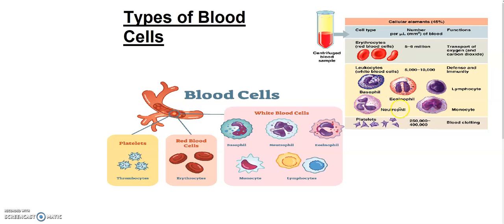These WBCs are formed in the white bone marrow. They all work to kill harmful germs — they engulf them. This process by which they engulf harmful organisms through the blood vessels is called phagocytosis. I will make a separate video about phagocytosis.